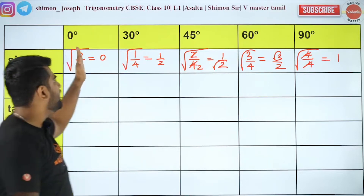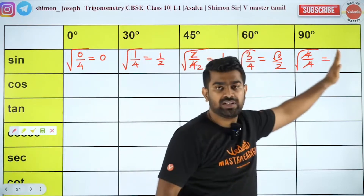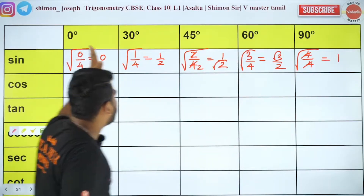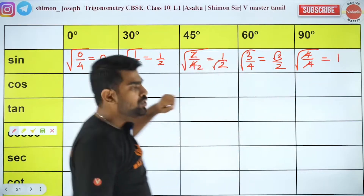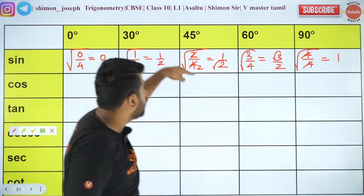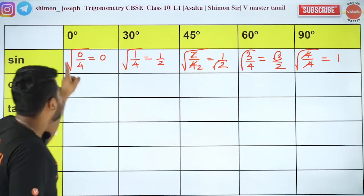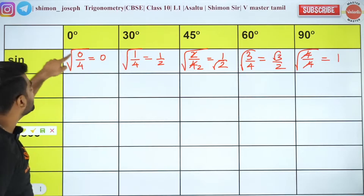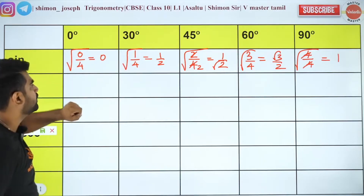First step: write 0, 1, 2, 3, 4. Second step: divide everything by 4 — so 0/4, 1/4, 2/4, 3/4, 4/4. Next, take the square root. Square root of 0/4 is 0. Square root of 0 is 0.